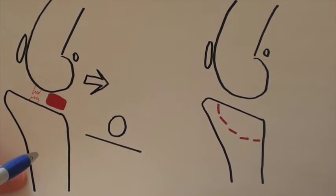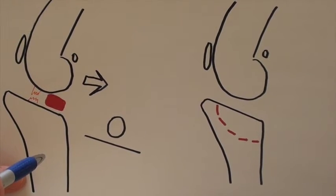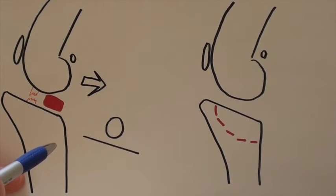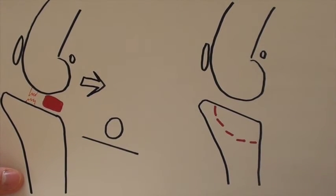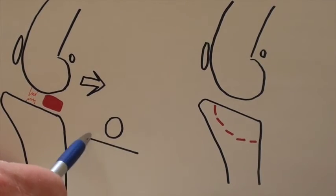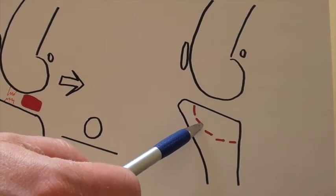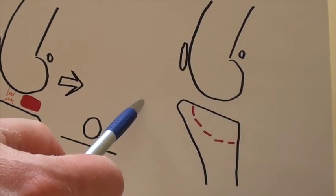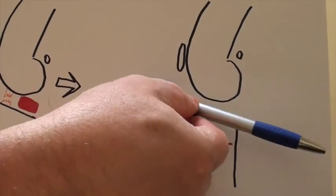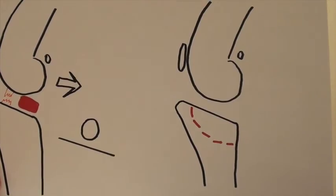With a technique called tibial plateau leveling osteotomy, one of the most common procedures performed in dogs over 30 to 40 pounds body weight, the idea is to get rid of the slope. In order to do that, we make a specialized cut in the tibia below the tibial plateau and rotate this whole section of bone so that the bone is flat.